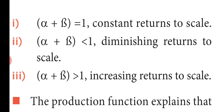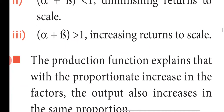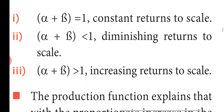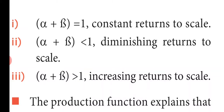The Cobb-Douglas production function states that when alpha plus beta equals 1, it is constant return to scale; when alpha plus beta is less than 1, it is diminishing return to scale; and when alpha plus beta is greater than 1, it is increasing return to scale. This follows the law of return to scale.